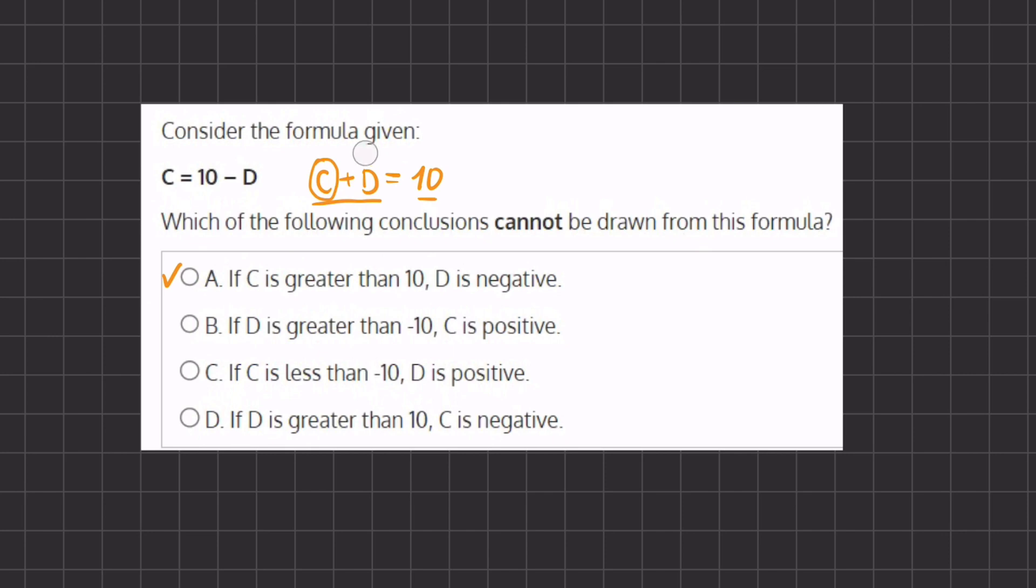Now let's move on to option B. If d is greater than negative 10, c is positive. Now if d is greater than negative 10, that means that it can also be equal to 10 or greater.